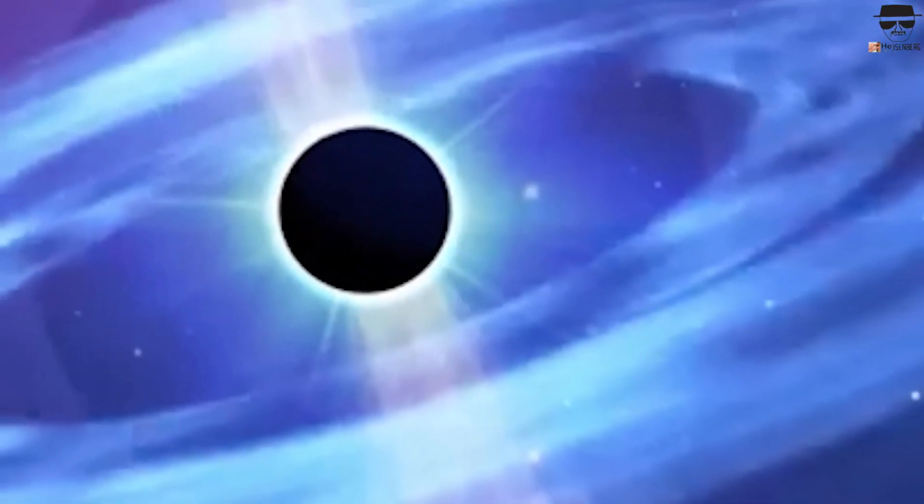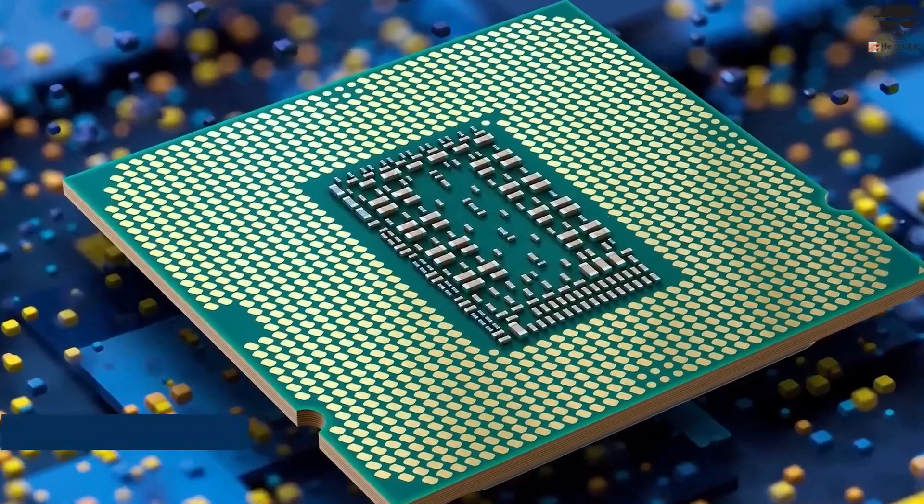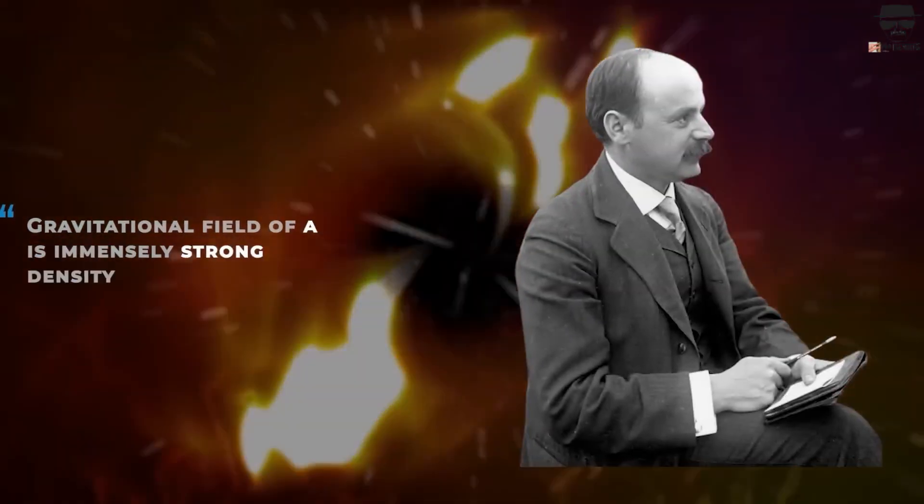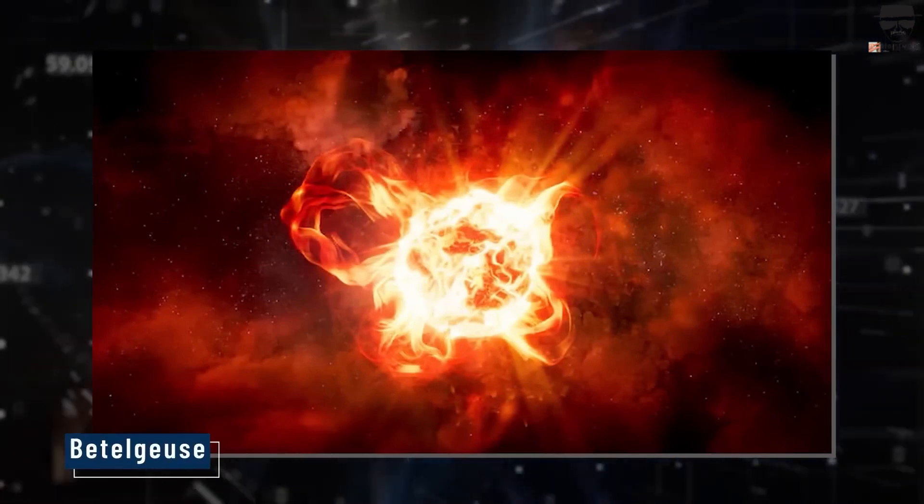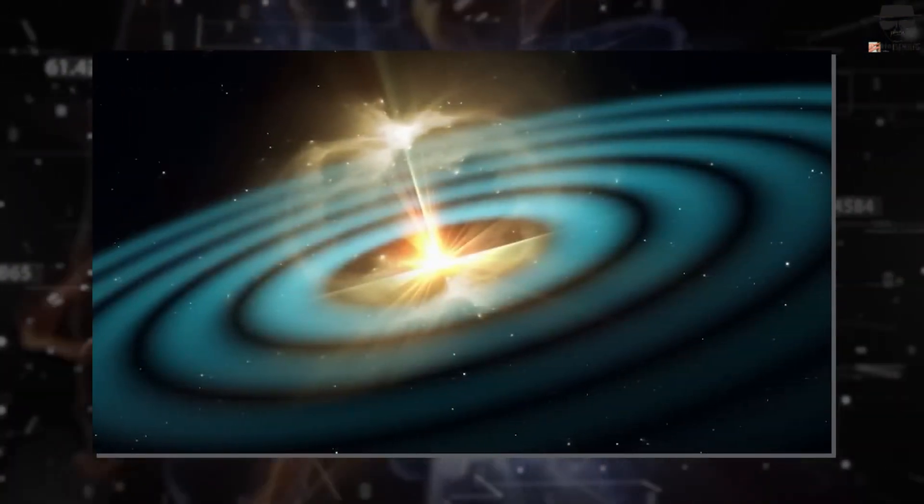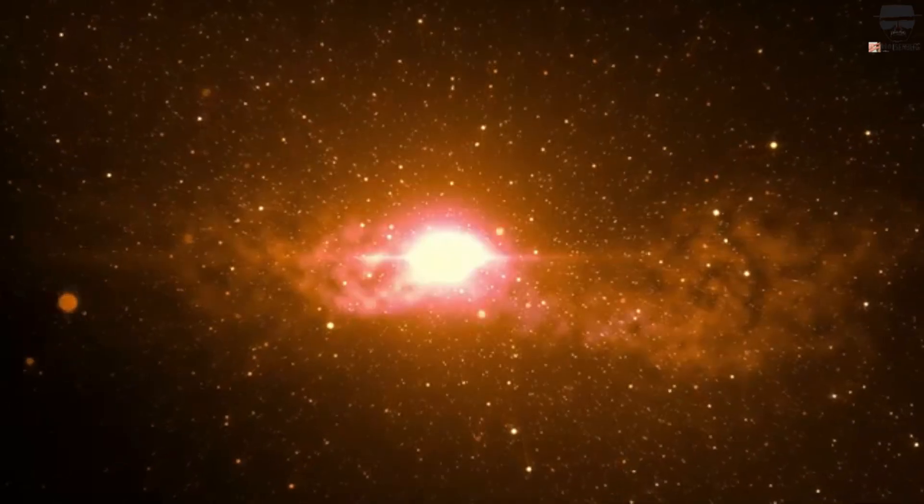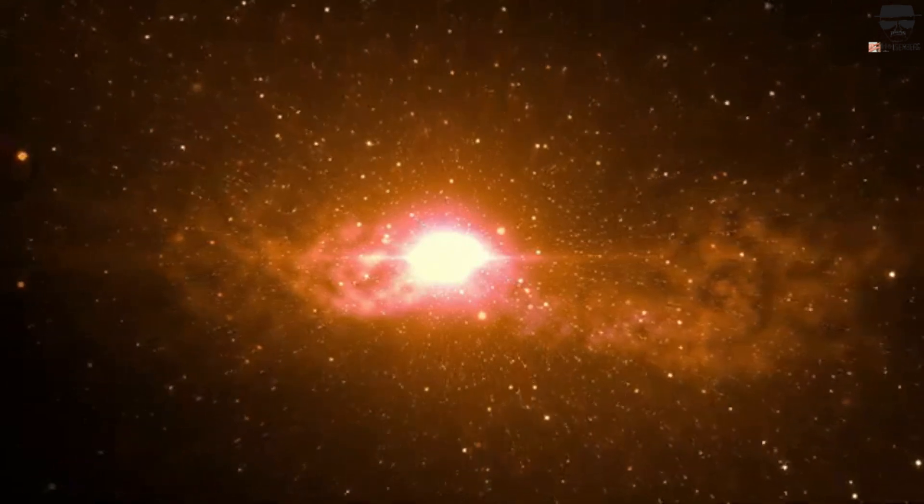But since Betelgeuse is so far away, such a tragedy is not likely to happen to us. Our beautiful planet is not in danger from the pollution. Instead, it adds to the background radiation, which helps our satellites and space telescopes work better and gives scientists a lot of information about how the universe works at very high energies. Our world is here because stars like Betelgeuse died a long time ago, before our solar system formed. This is why there are no supernovae around today. I hope you liked this interesting trip through the universe.